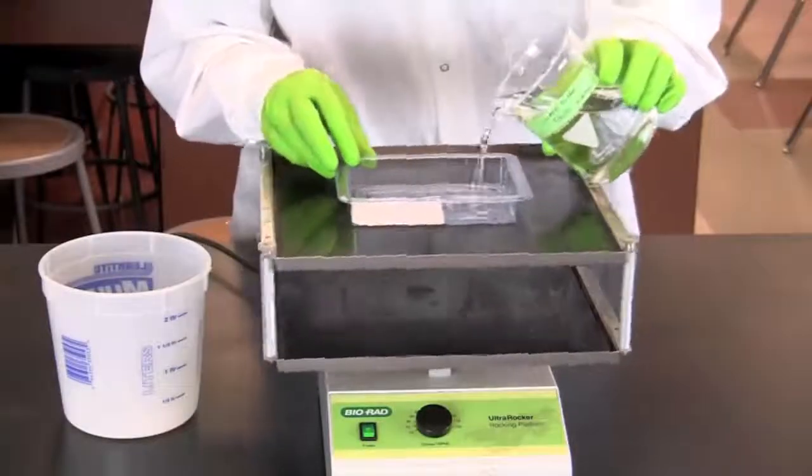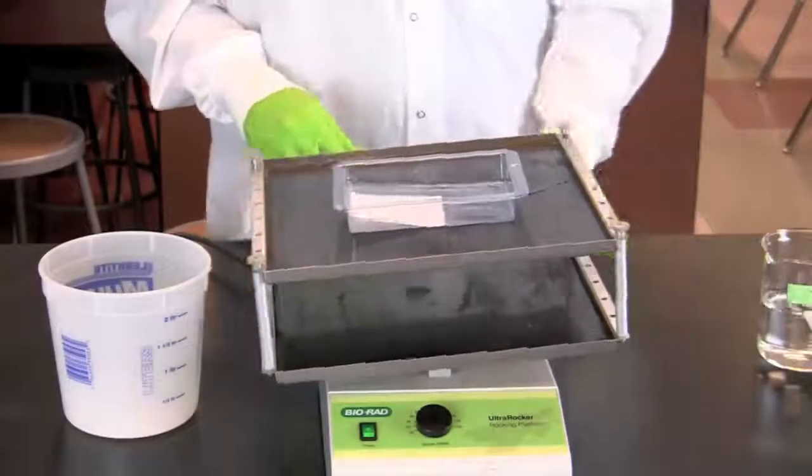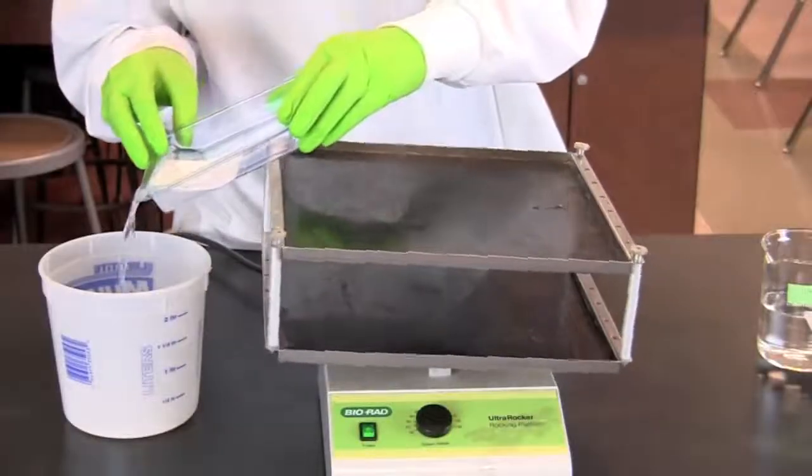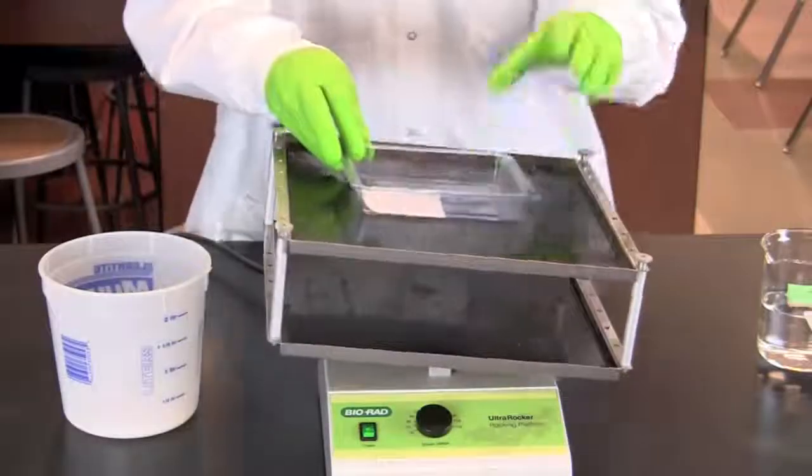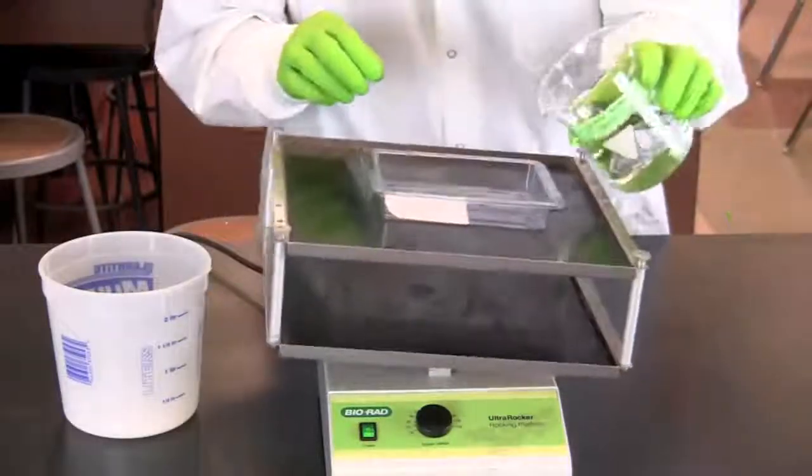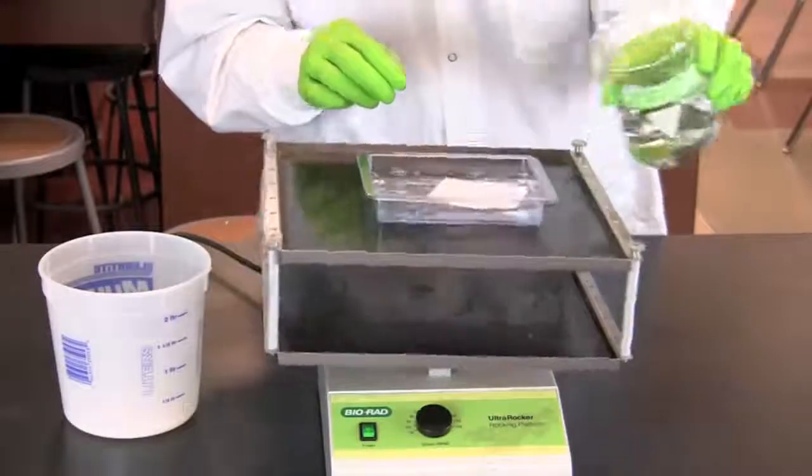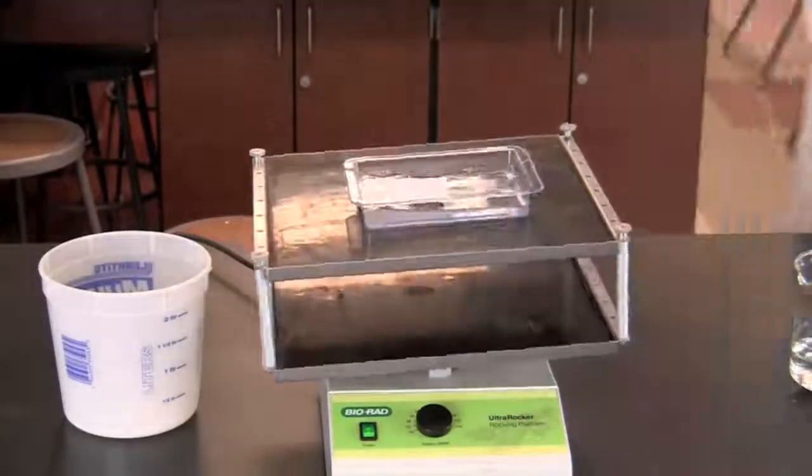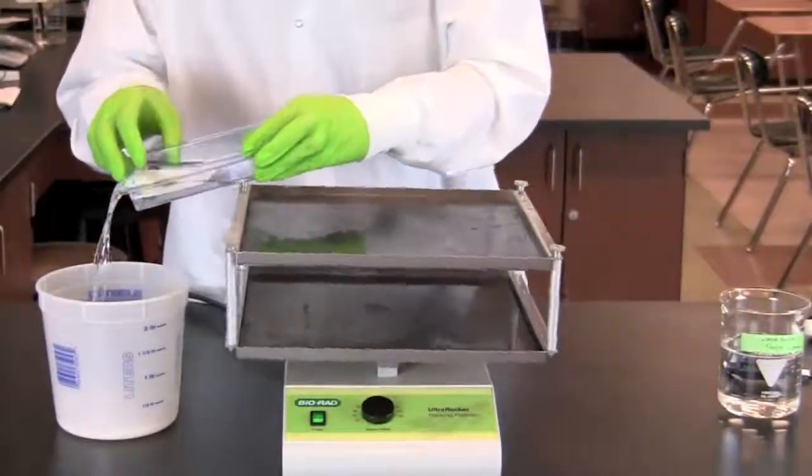Rinse the membrane quickly in 50 milliliters of wash buffer and then discard the wash buffer. Add another 50 milliliters of wash buffer to the membrane and let it wash for three minutes on the rocking platform at a medium speed setting. Discard the wash buffer.